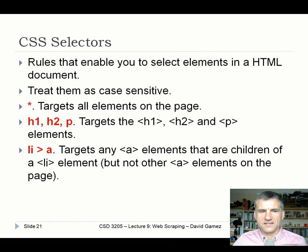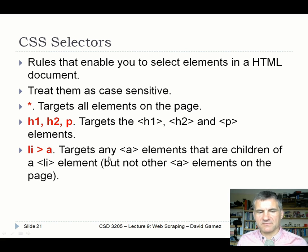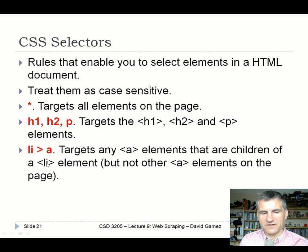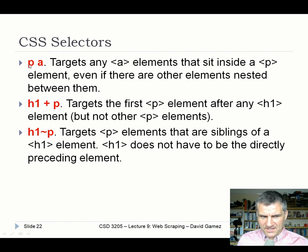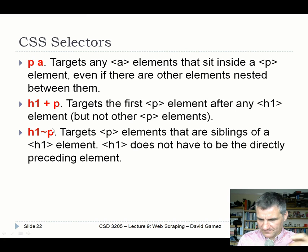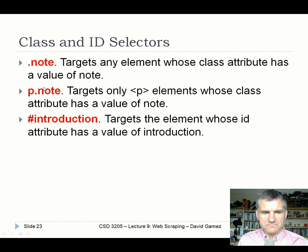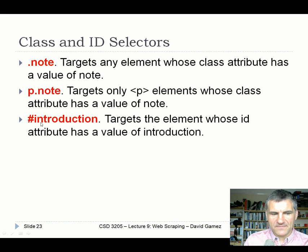CSS selectors are rules that let you select elements in an HTML document - treat them as case sensitive. You'll remember selecting all elements on the page, selecting individual tags, doing document object model relationships like anchor elements that are children of list elements, or anchor elements inside paragraph elements, first paragraph after a header, and siblings at the same level of the tree. The really useful ones are selecting by class - picking out elements styled with a particular class - or the easiest of all, picking them up by ID using the hashtag.